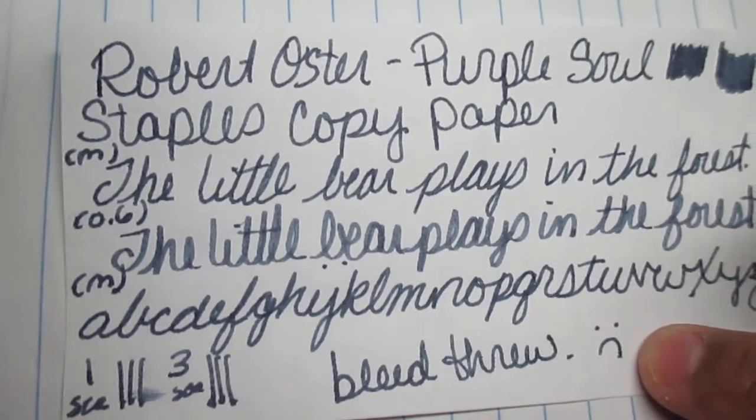Bleed through. Frowny face. You can definitely see it in the scrubbies, and everywhere I stepped, you can see where it bled through. You could probably sacrifice the paper underneath. But it's cheap stuff, Staples copy paper. So, yeah, to be expected.